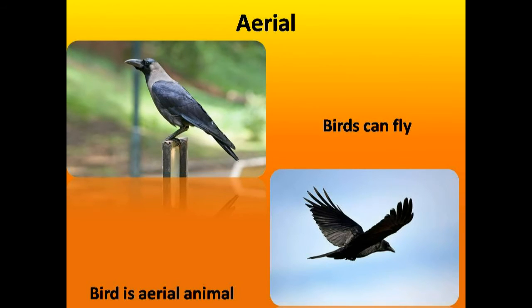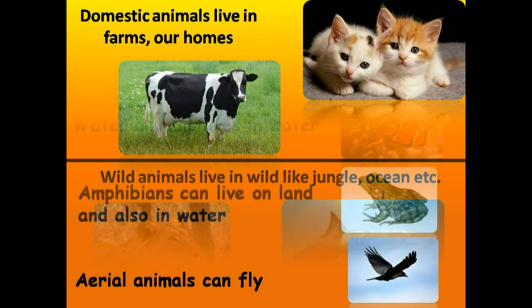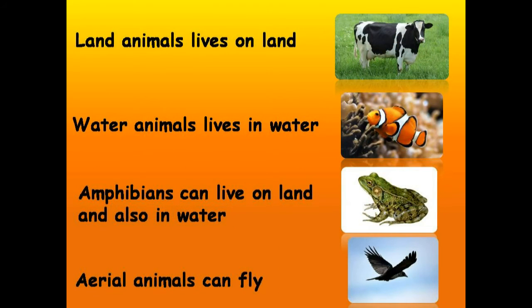So, a few animals live with us and help us — they are domestic animals, like cat, dog, cow, goat, etc. They live on a farm with us. Wild animals live in the jungle, ocean, etc. Land animals live on land, like cat, dog, tiger, rhino, etc. Water animals, also called aquatic animals, live in water, like fish, shark, dolphin, etc. Amphibians can live on land and also in water, like frogs.